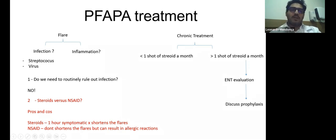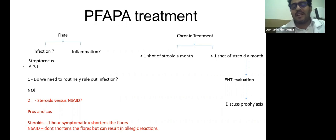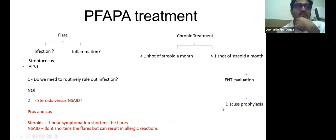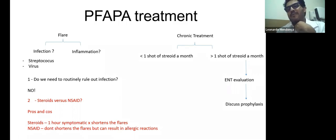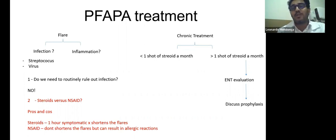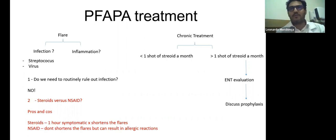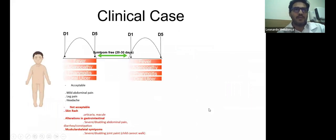For families who don't want surgical treatment, prophylaxis can be used. I have great experience using colchicine at very low doses — it's not toxic and is effective in controlling both fever and mild symptoms accompanying PFAPA. Some physicians use cimetidine, though I don't have as much experience with it. We discuss the chronic treatment plan with families and let them choose. If children still have flares or fever after surgery, we consider additional prophylaxis.